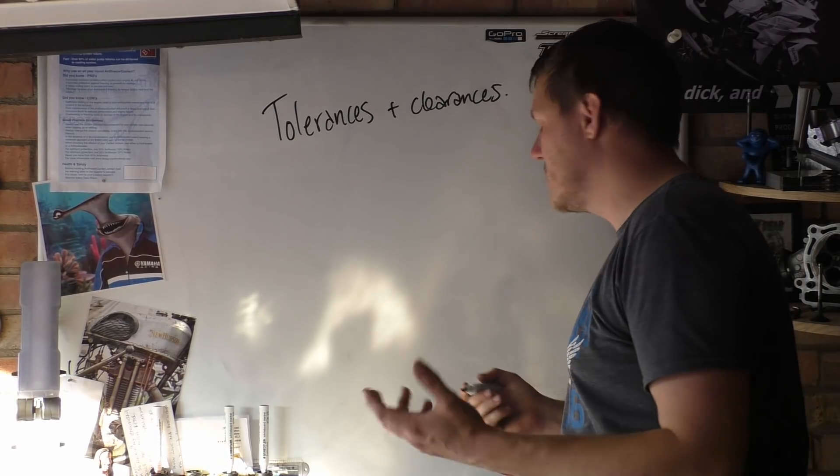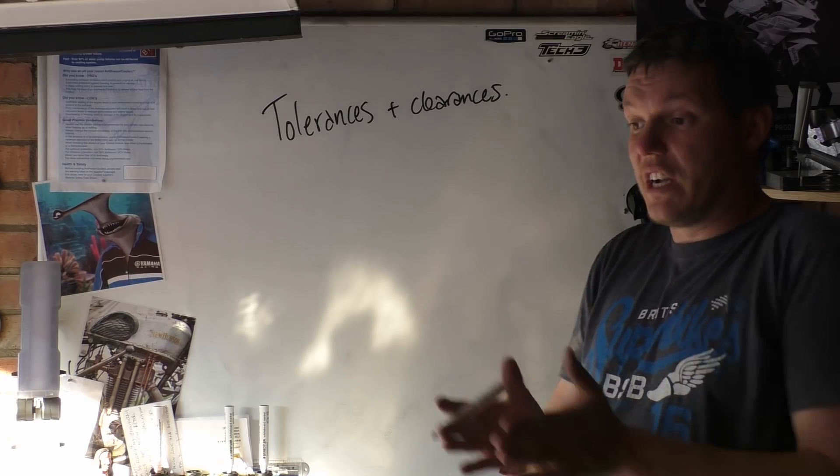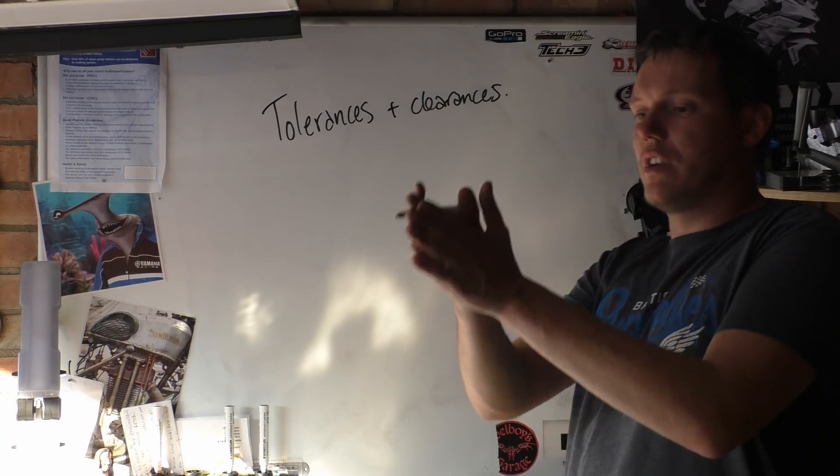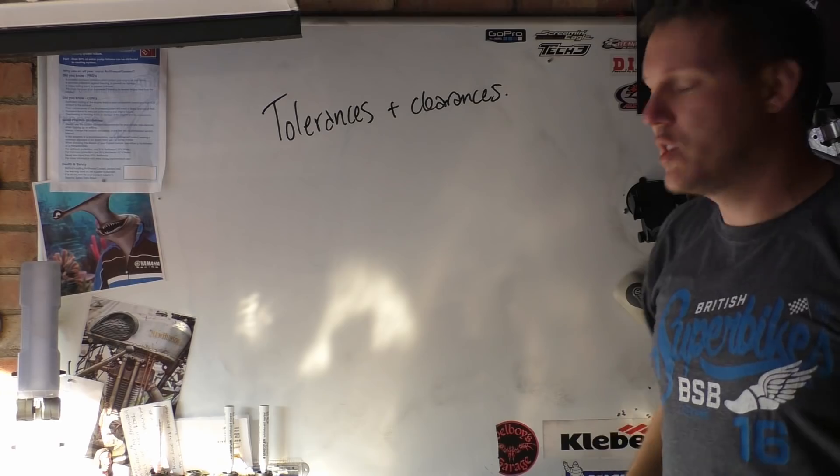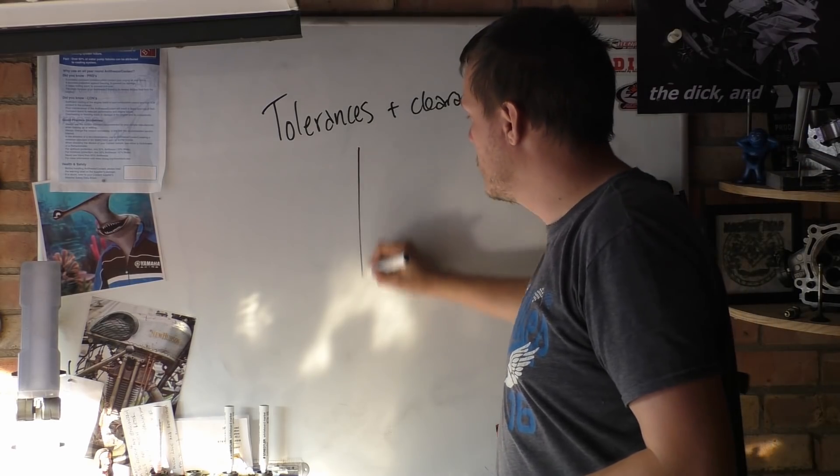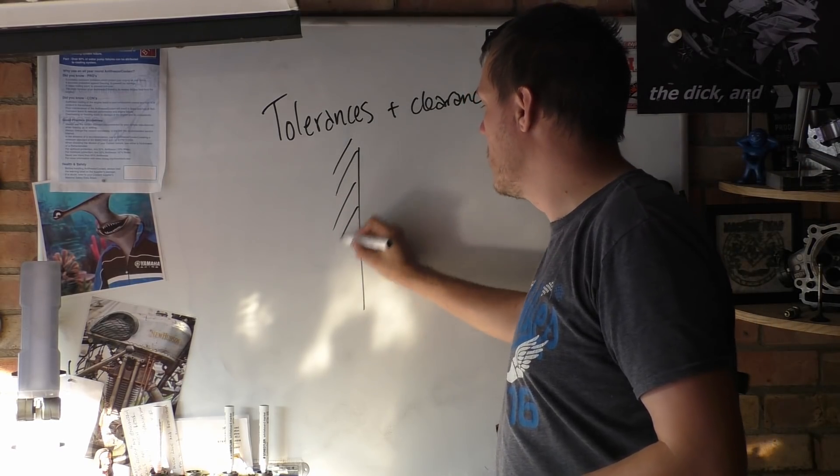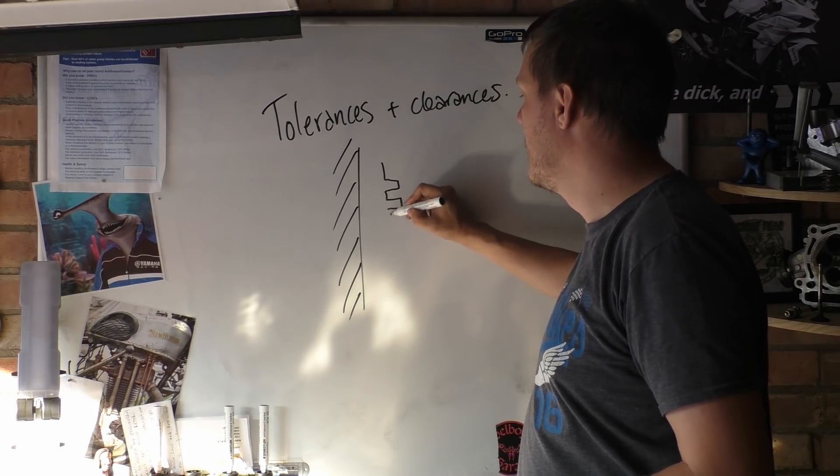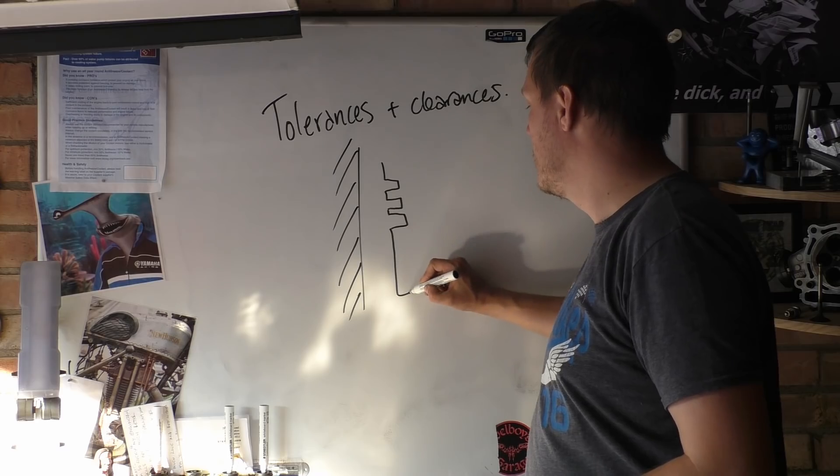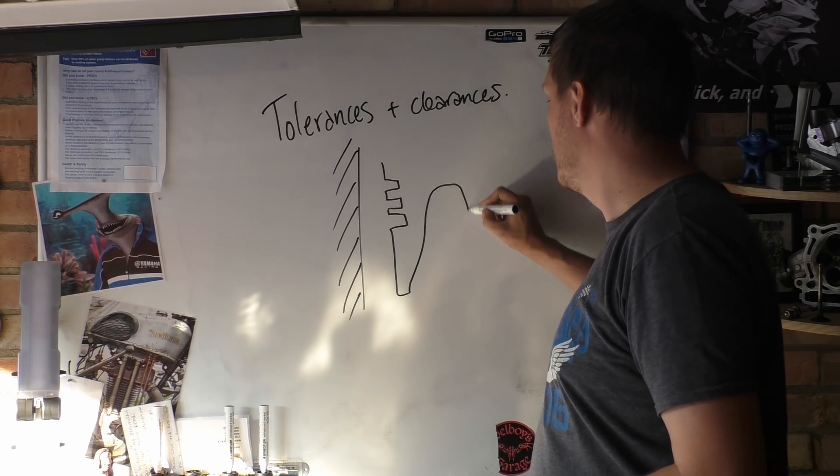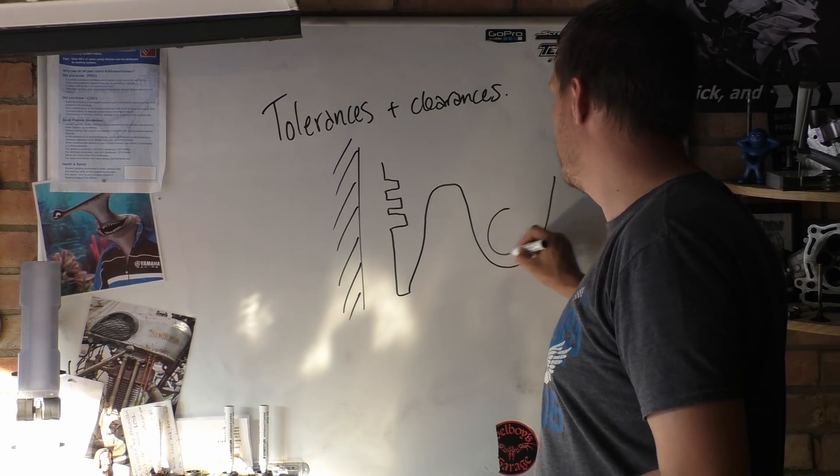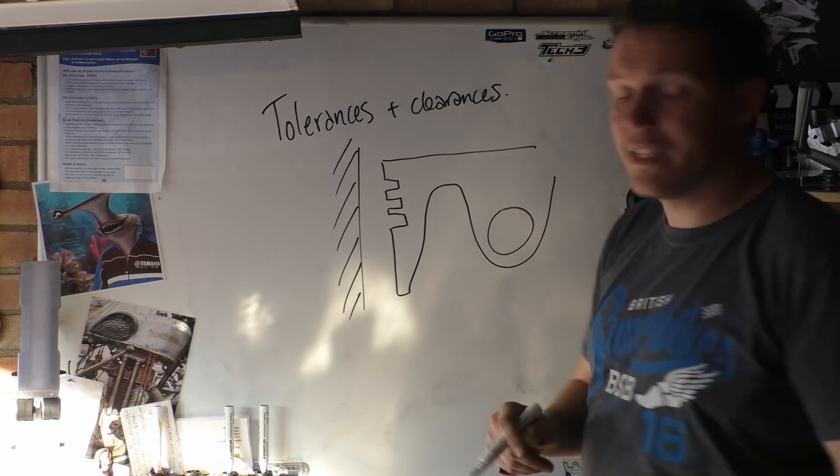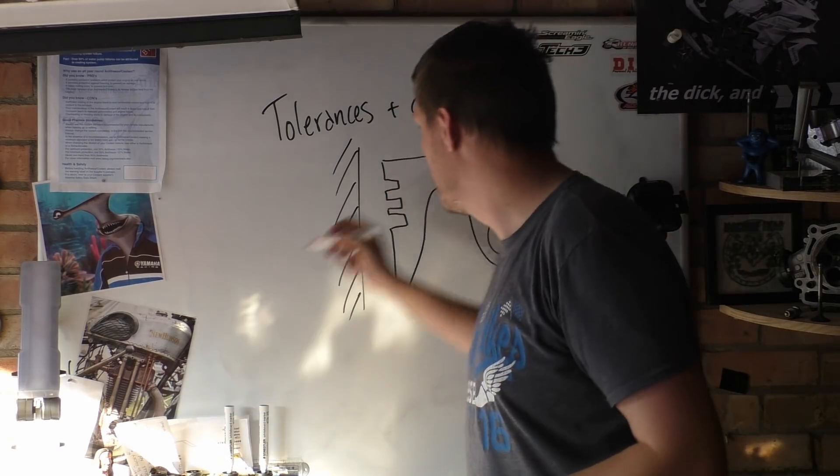So a clearance is the clearance, the distance, the clear air, nothing between two components. So you can have a cylinder wall like this and then you can have a piston. Going back into the drawing. A piston like this and the clearance will be this bit.